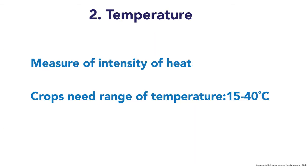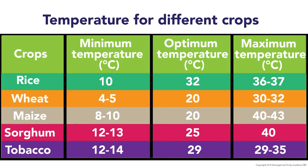Temperature is the measure of intensity of heat. Normally crops need a temperature range of 15 to 40 degrees Celsius. For rice, the minimum temperature is 10°C, optimum is 32°C, and maximum is 36 to 37°C. Likewise, temperature ranges are given for wheat, maize, sorghum, and tobacco.